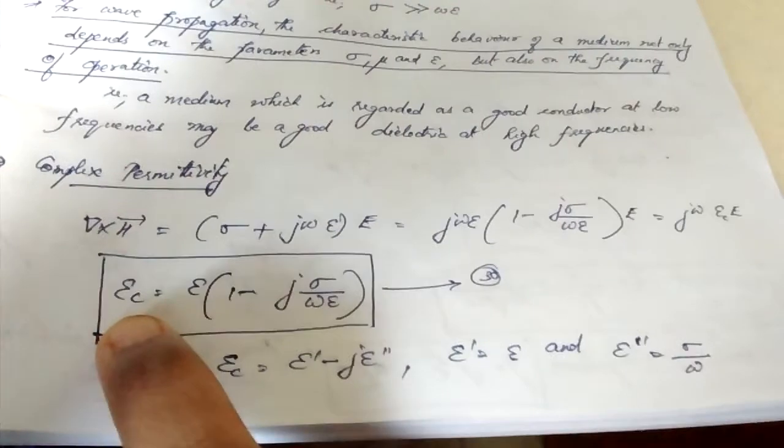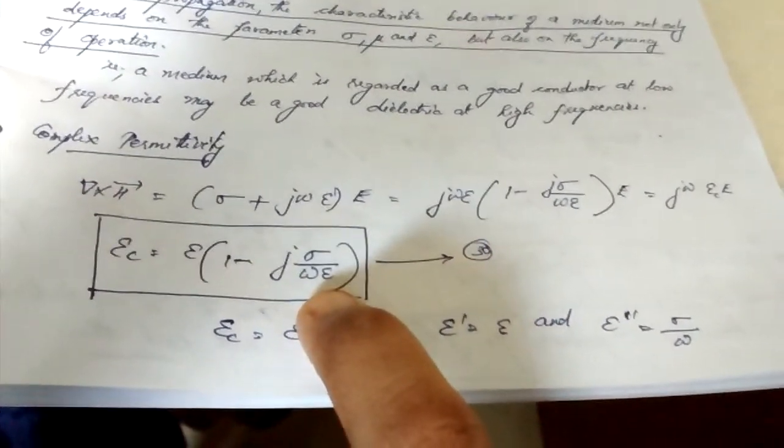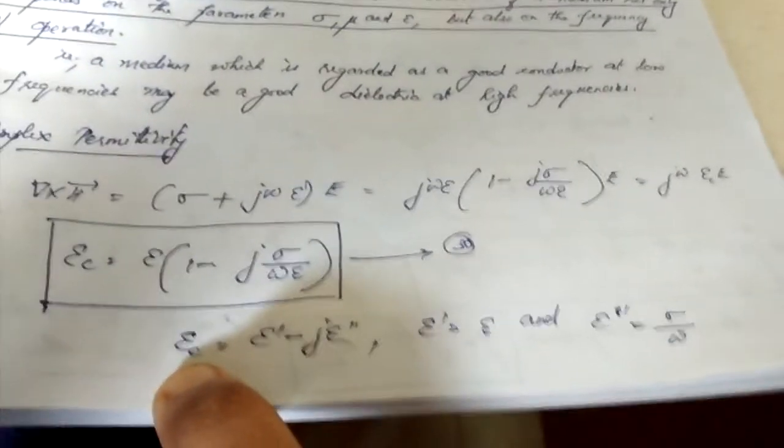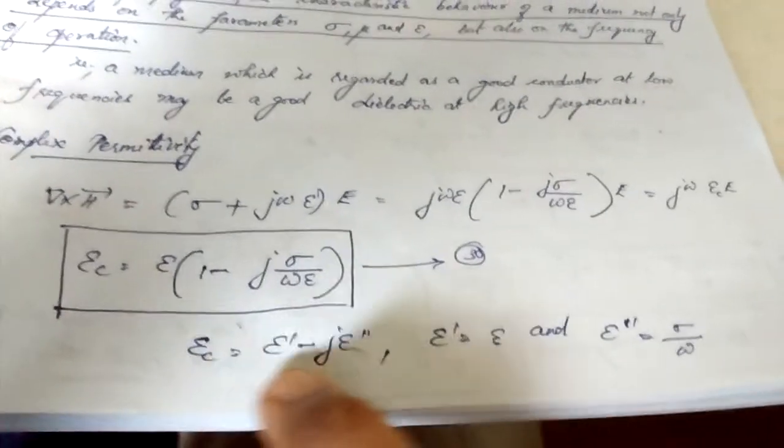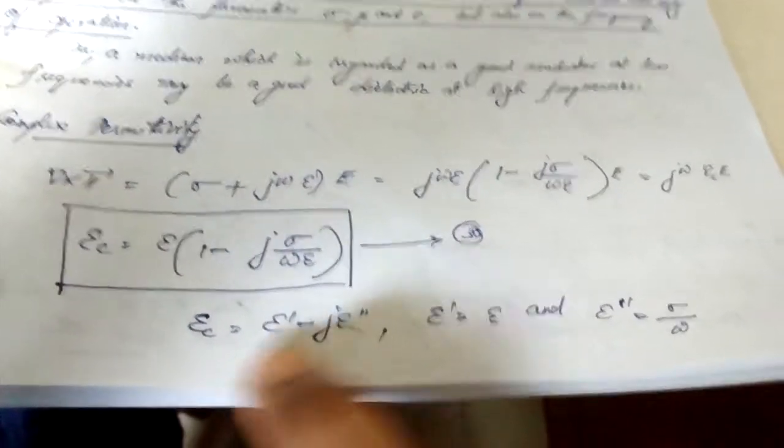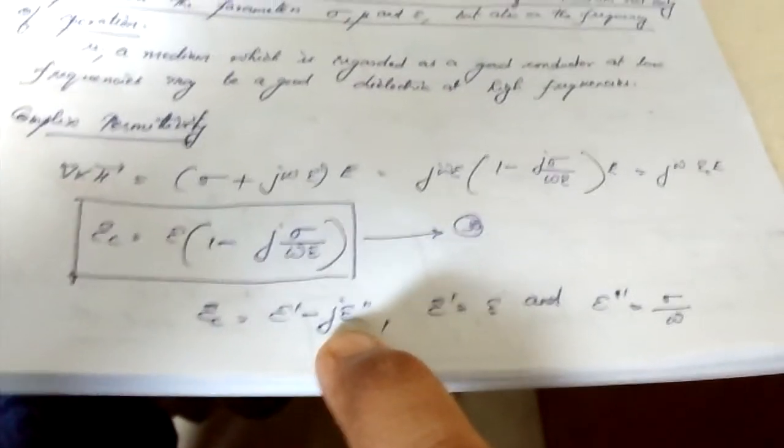Epsilon C can be written as epsilon into 1 minus j sigma by omega epsilon. Complex permittivity means you have a real part and an imaginary part, so you are writing it as epsilon dash minus j epsilon double dash.